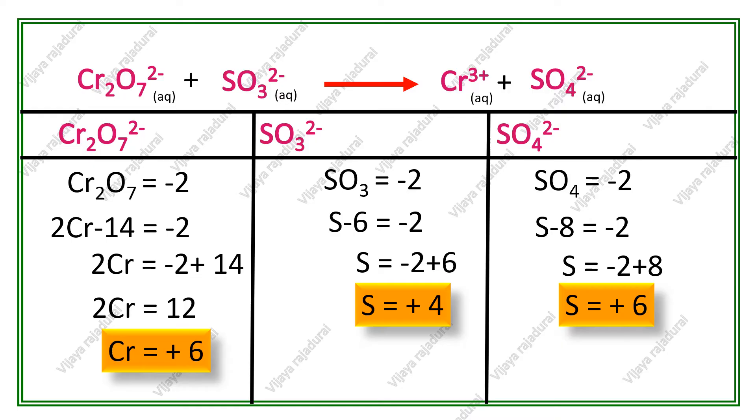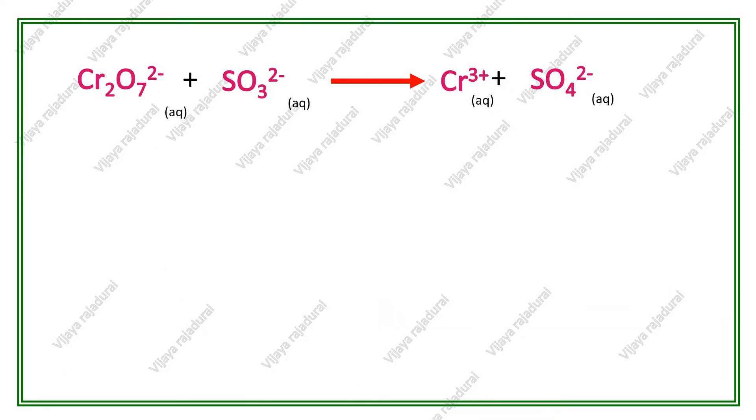Now we calculate the number of central ions. On the reactant side, there are 2 chromium atoms. On the product side, there is 1 chromium. So, on the product side, we convert it to 2 times chromium 3+ ion.